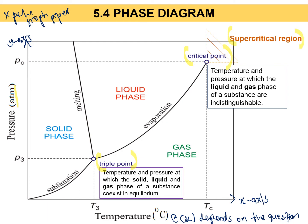The supercritical region is not a point — it is actually a region. Any area beyond the critical point is called the supercritical region. Although this is rarely tested and is not strictly in the syllabus, it has appeared in previous PSPM papers, so you should be aware of it. Any region that passes the critical point, beyond a certain line, is the supercritical region.